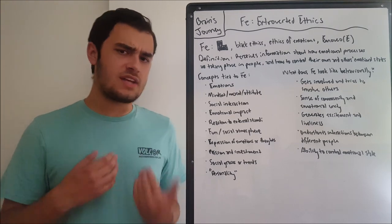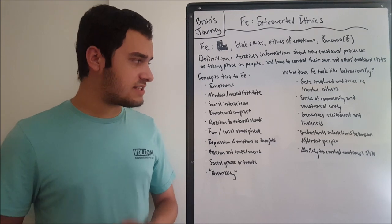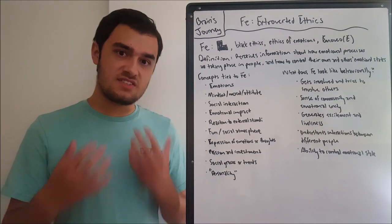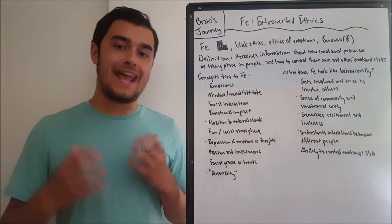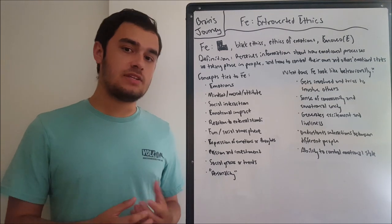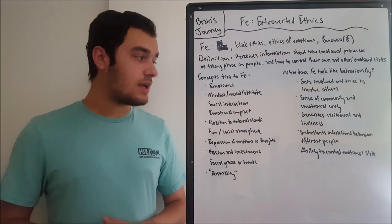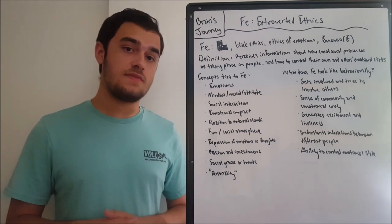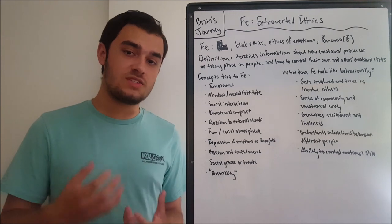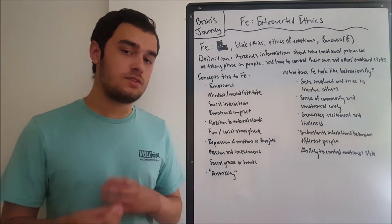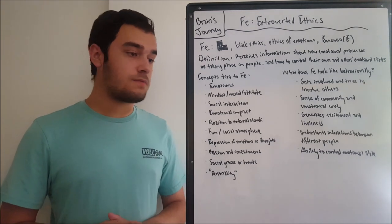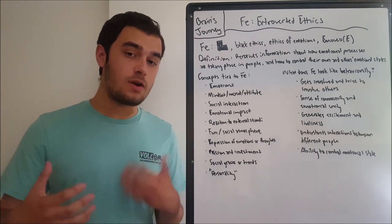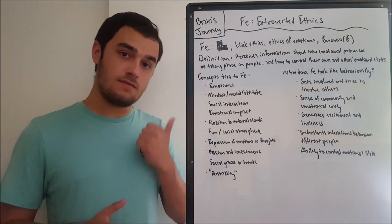FE perceives information about how emotional processes are taking place in people, and also how to control their own and others' emotional states. The first concept is bare emotions, expressiveness — the emotions that we feel: anger, sadness, happiness in their amplified forms. The archetypes of those emotions are what FE focuses on, and the information that FE interprets is related to many different emotive states and nuanced interconnections between different emotions. It understands this very well.